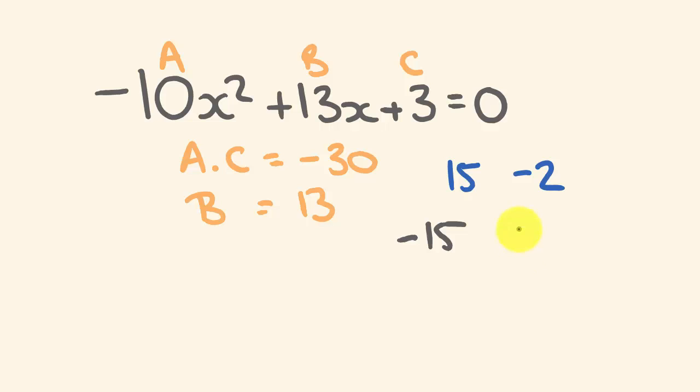Negative 15, positive 2. And we put those over the coefficient to be able to see what x is equal to. The coefficient is negative 10, negative 10. Okay, so negative 15 divided by negative 10, x could be equal to, okay, that's going to cancel each other out. 15 divided by 10 is 1 and a half. 2 divided by minus 10, we've got a negative 1 fifth.